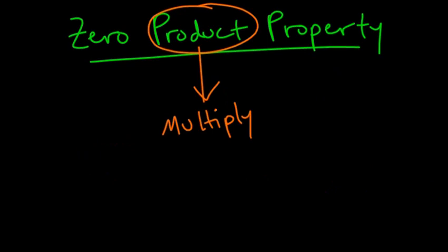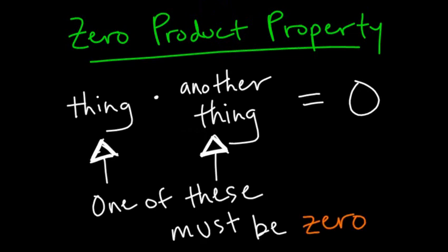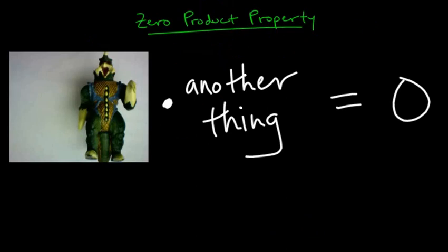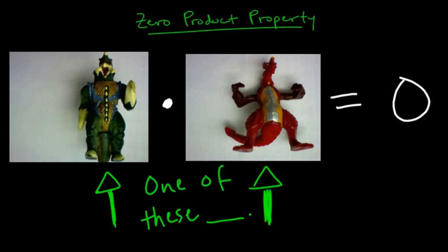Alright. So, the zero product property. Product tells us we need to multiply. So if we take one thing, multiply it by another thing, and that gives us zero, then we know that one of those things must have been zero.